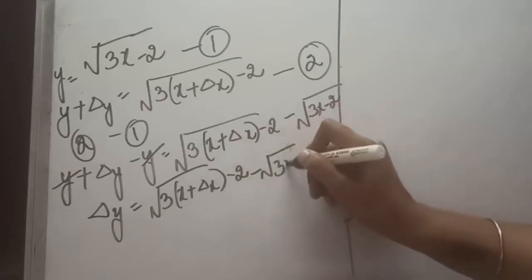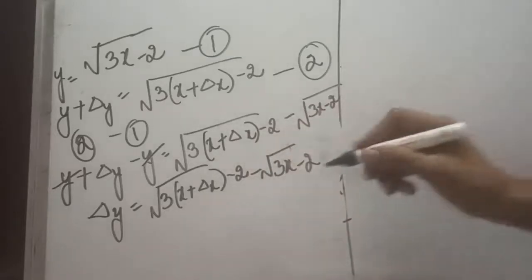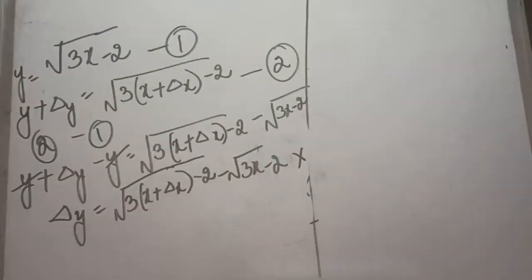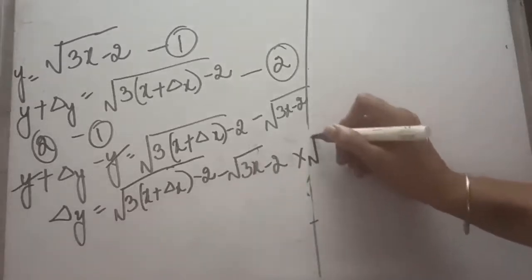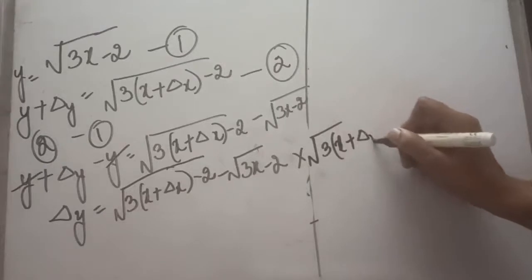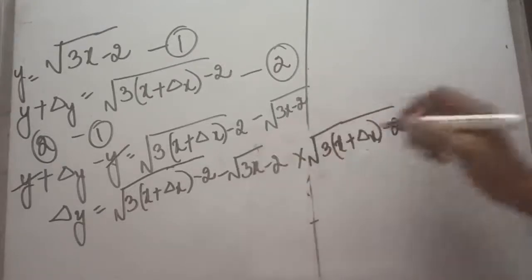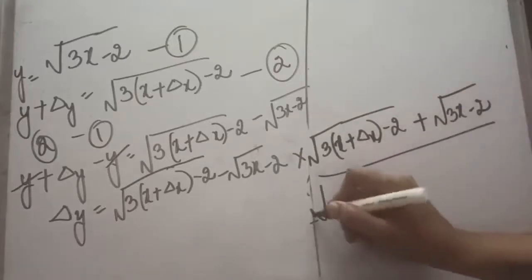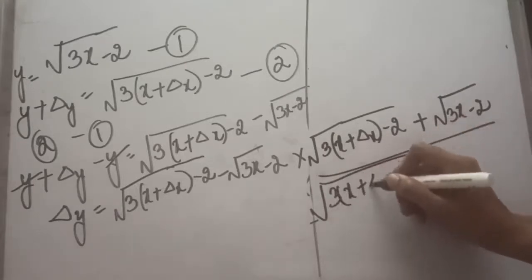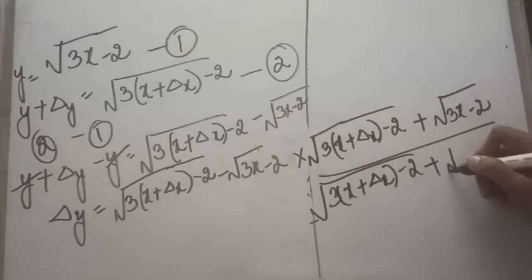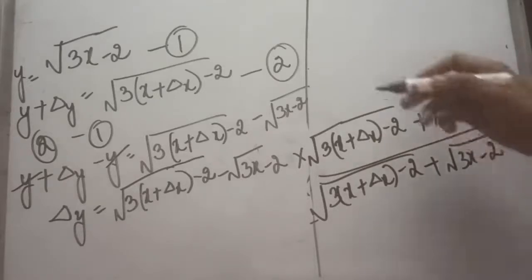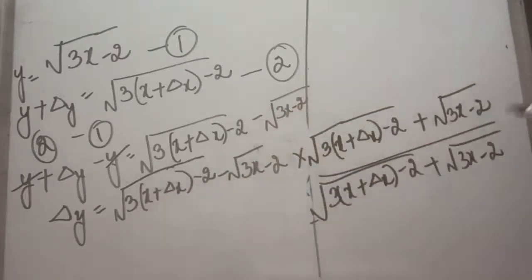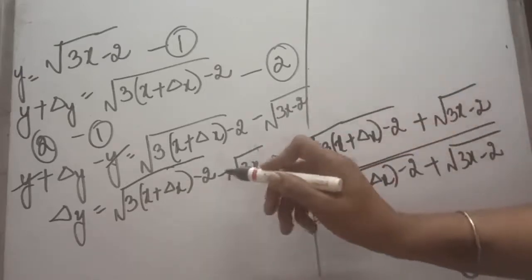Before proceeding, let us remove these under roots. Rationalization means multiplying and dividing with the same figure. So here, applying the rationalization process, I am going to copy this entire expression — root(3x + delta x - 2) — and change only the sign. By dividing and multiplying with the same conjugate, if I cancel it will be 1.